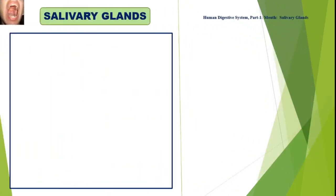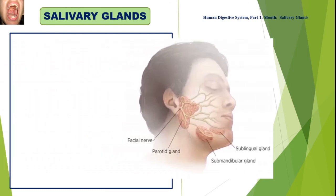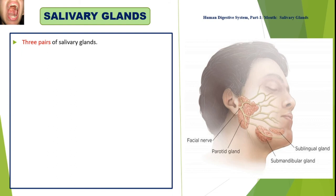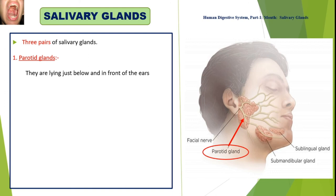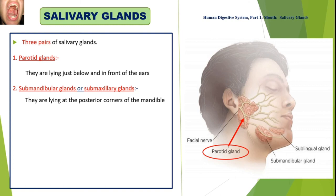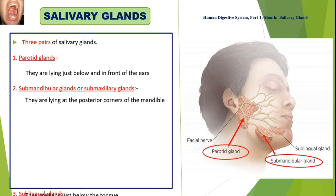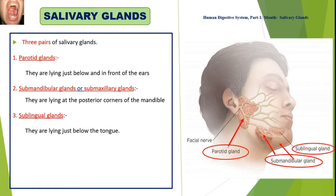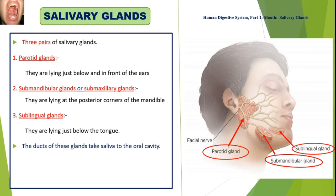Let us discuss human salivary glands. We have three pairs of salivary glands. First, the Parotid glands, lying just below and in front of the ears. Second, the Submandibular glands, also known as submaxillary glands, lying at the posterior corners of the mandible. Third, the Sublingual glands, lying just below the tongue. The ducts of these glands carry saliva to the oral cavity.